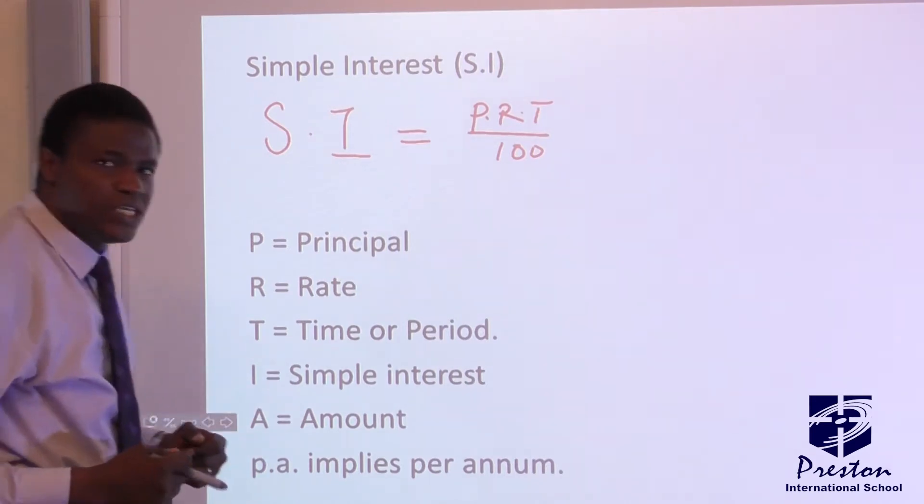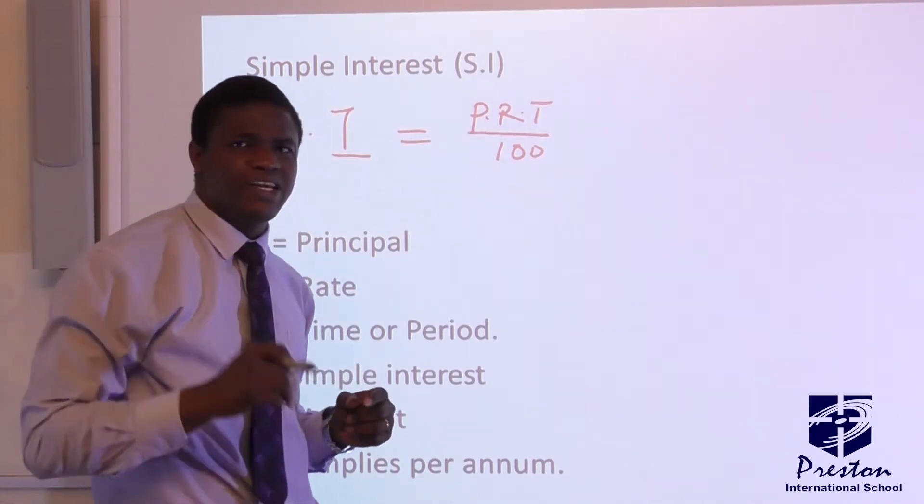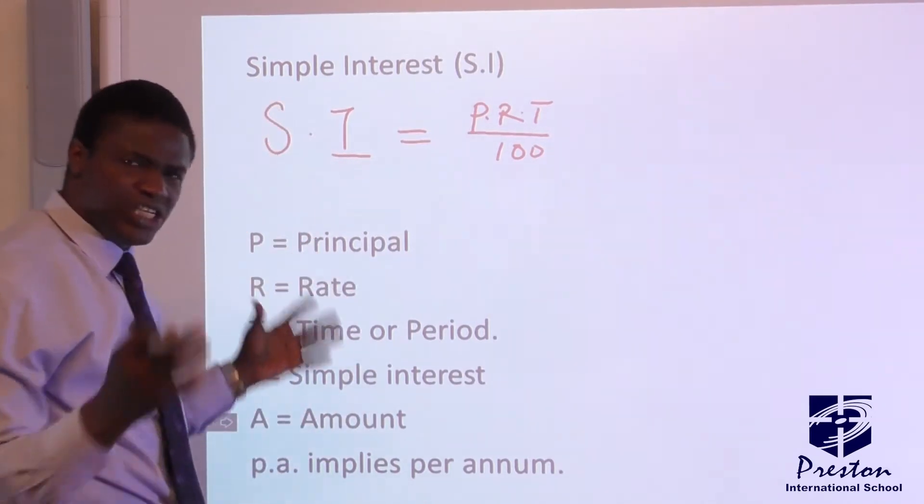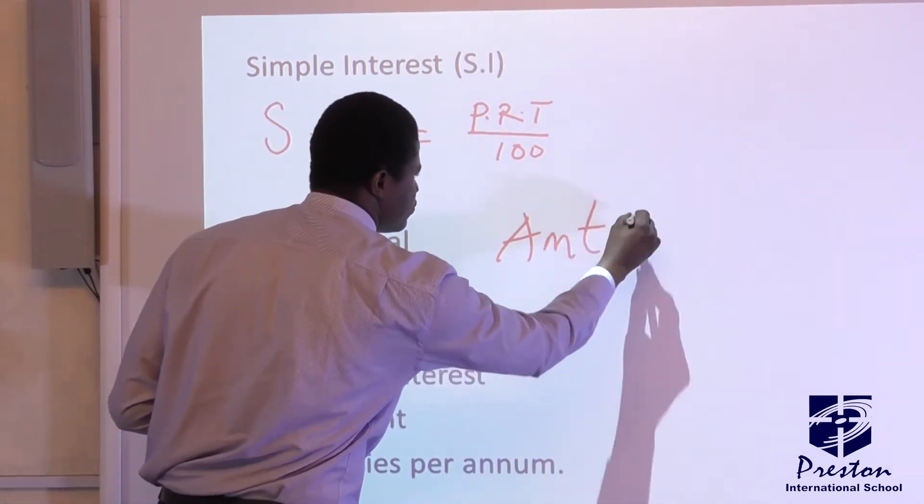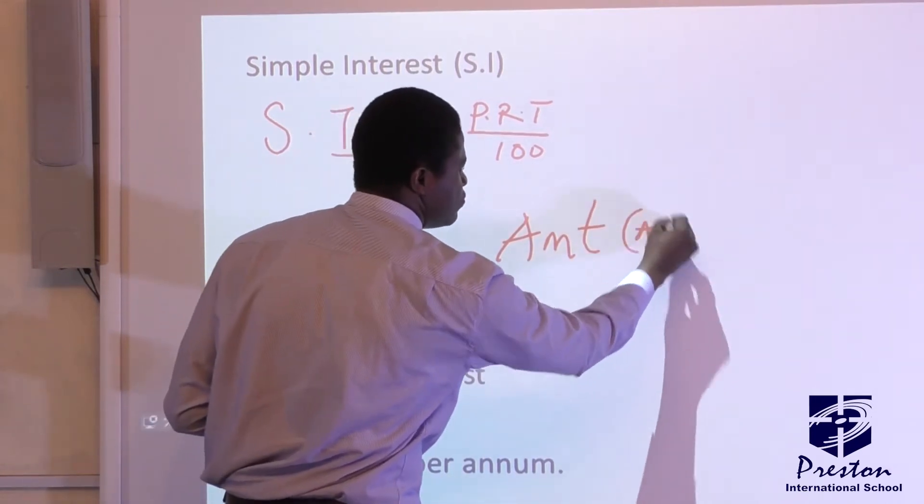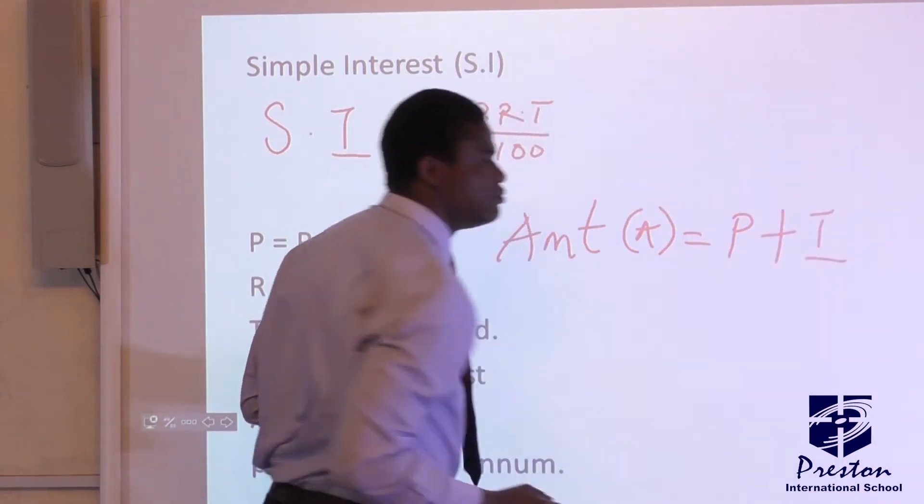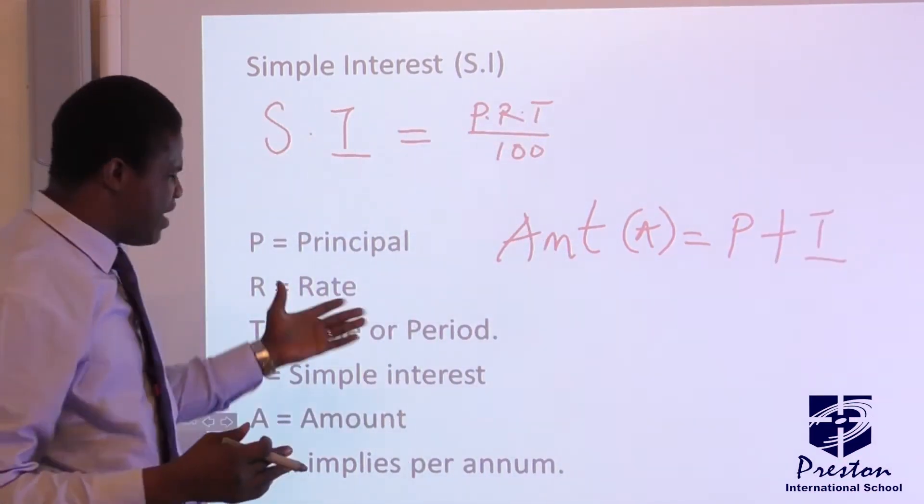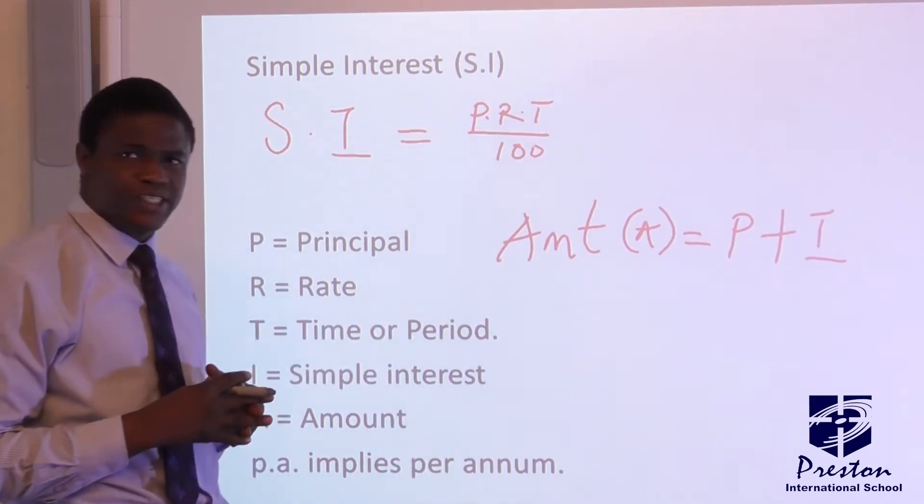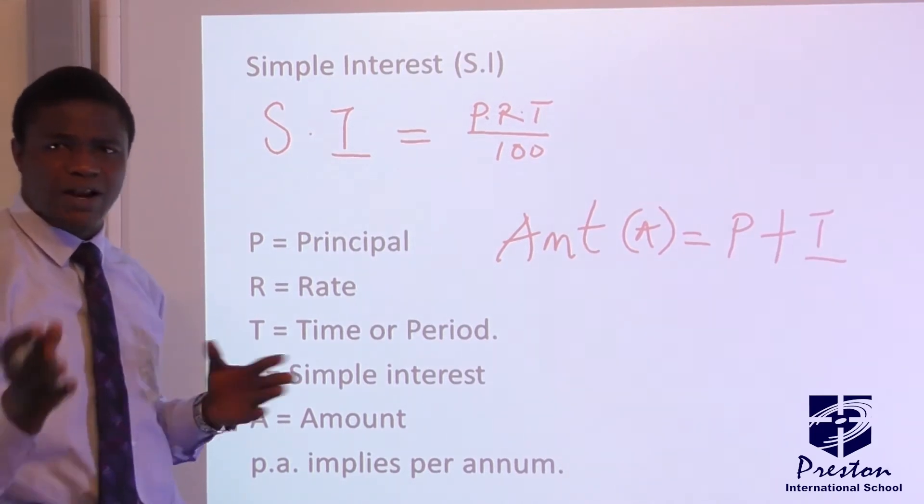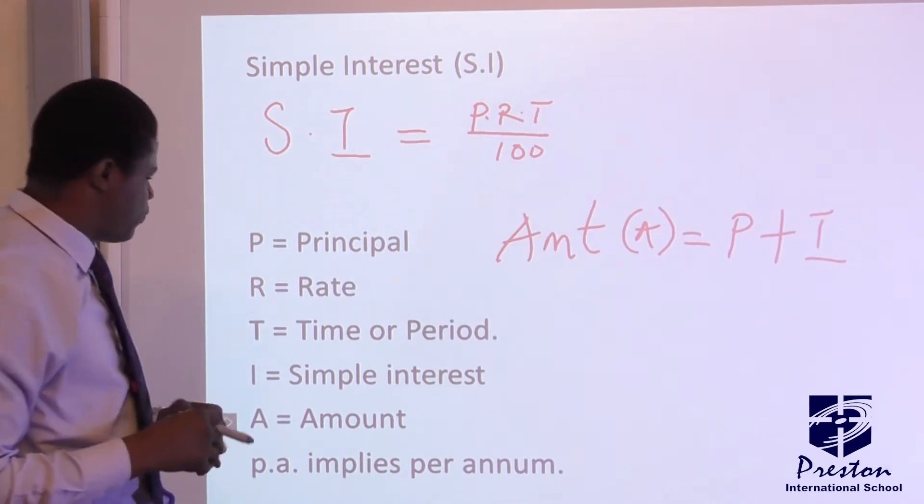Now we have amount A. Now I want you to pay attention to this because the application of this topic is very, very important in the commercial world. Now when you are talking about amount A, amount is equal to the principal plus interest at the end of the day. In banking sector and some other areas, they are used to this method in giving out loans and other things. So take note of that. Amount is equal to principal plus interest.